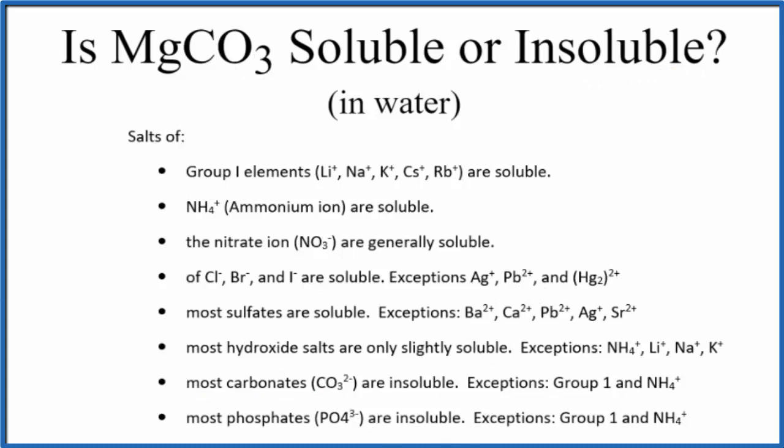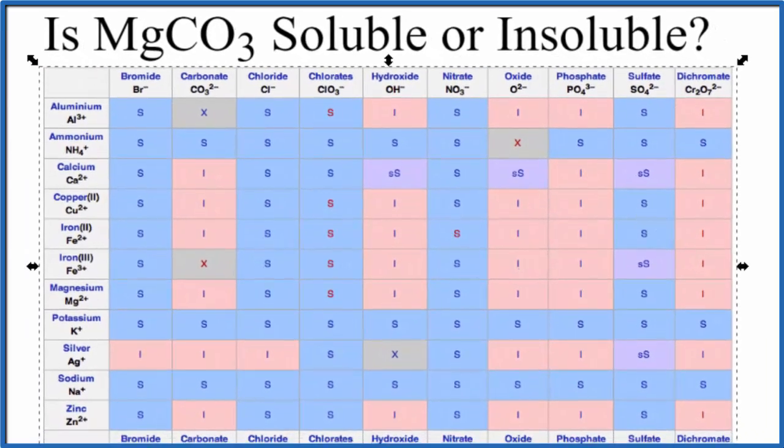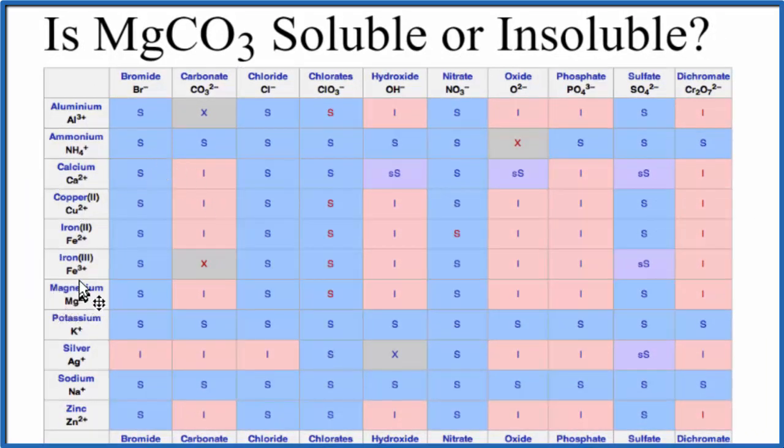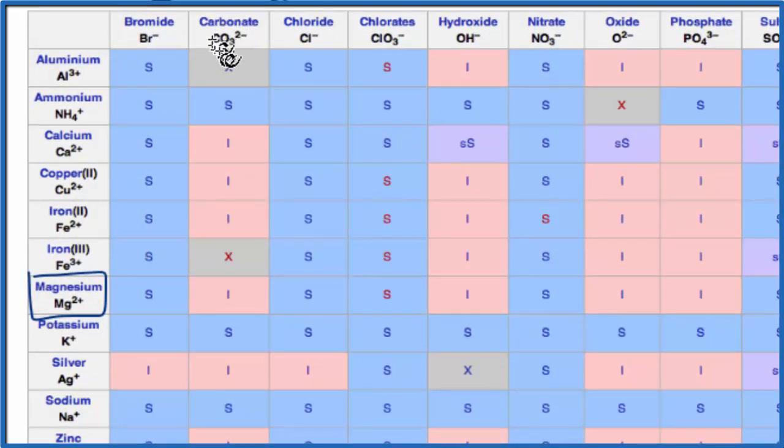We could also look at a solubility chart. So here's the solubility chart. The positive ions are on the left here. Across the top we have the negative ions. So magnesium right here, Mg2+, that's the magnesium ion, carbonate, CO3 2-, right there. So we go over and down, and that I means that magnesium carbonate is going to be insoluble in water.